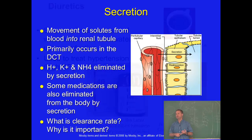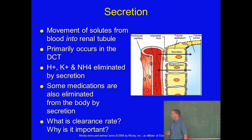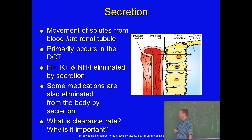Secretion is the movement of substances from inside the bloodstream back into the tubule — mainly hydrogen ions, potassium ions, and ammonia, which are secreted from the blood into the tubule where they will be eliminated. Clearance rate is the rate at which any ion or metabolite moves out of the bloodstream and is eliminated by the kidneys. This is discussed in the context of pharmaceuticals — how long it takes to clear drugs from the body, including anesthetic drugs eliminated via the kidneys.